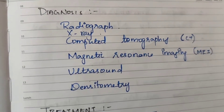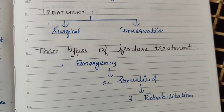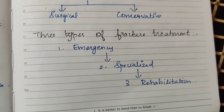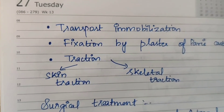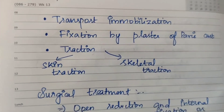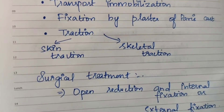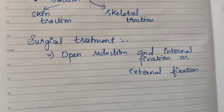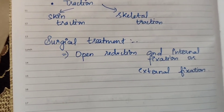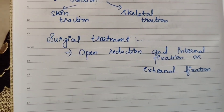Diagnosis includes radiograph (X-ray), CT scan, MRI scan, ultrasound, and densitometry. Treatment for fracture includes emergency care, specialized care, and rehabilitation. Conservative treatment involves immobilization, fixation by plaster of Paris cast, and traction — skin traction or skeletal traction. Surgical treatment includes open reduction with internal fixation or external fixation. Analgesic tablets are also administered.